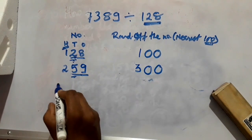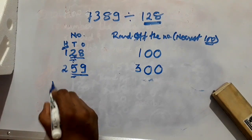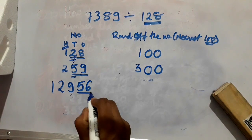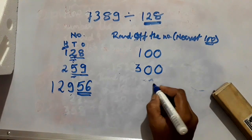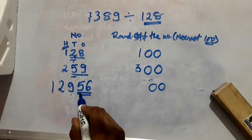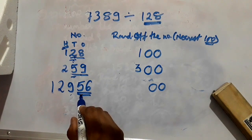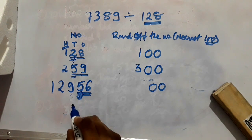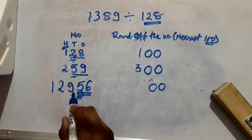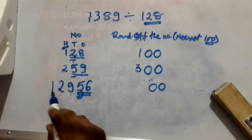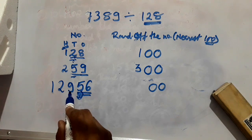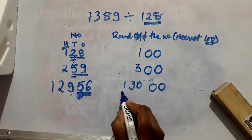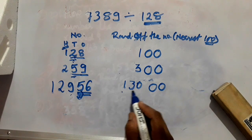Let us try a larger number: 12,956. Round off to the nearest 100. Underline 2 digits and write two zeros. Check the digit at the higher place among those underlined — here it is 5, and the condition is satisfied. So add 1 to the previous number: 129 becomes 130. So 12,956 when rounded off becomes 13,000. Remember that we round off numbers only to estimate values.